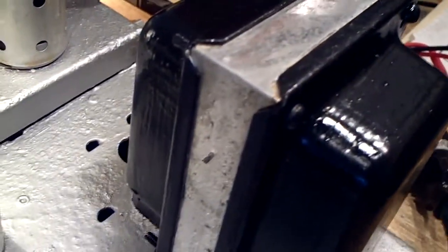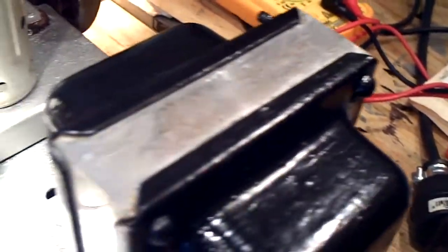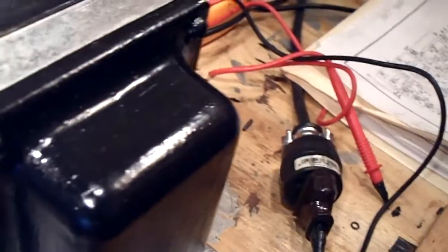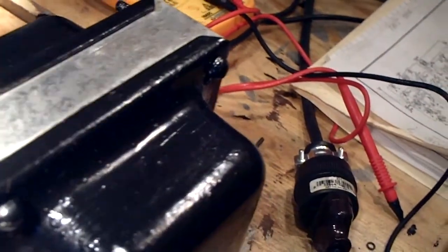This is the semi-gloss black paint and the chrome has some pits in it, but that's to be expected. It's a 75-year-old transformer. But the paint job came out reasonably okay.